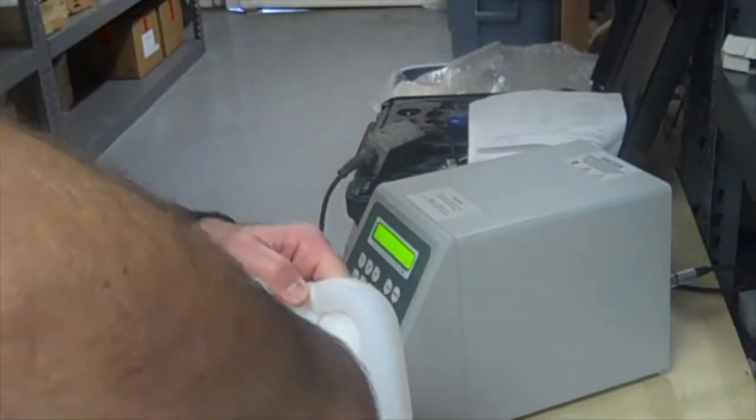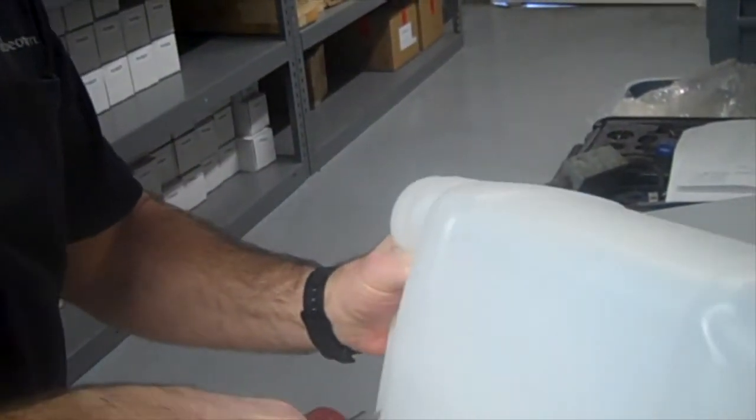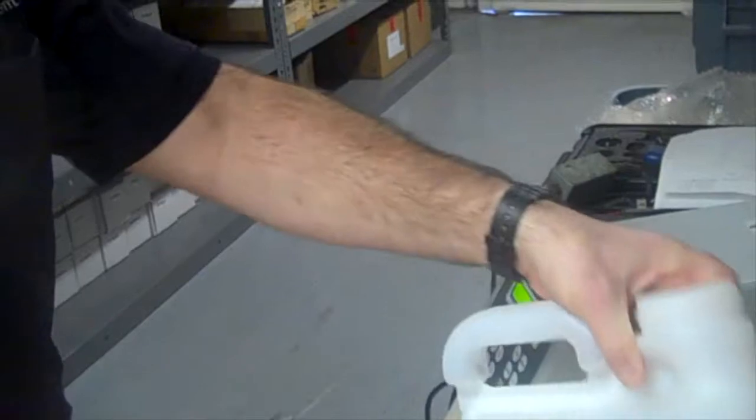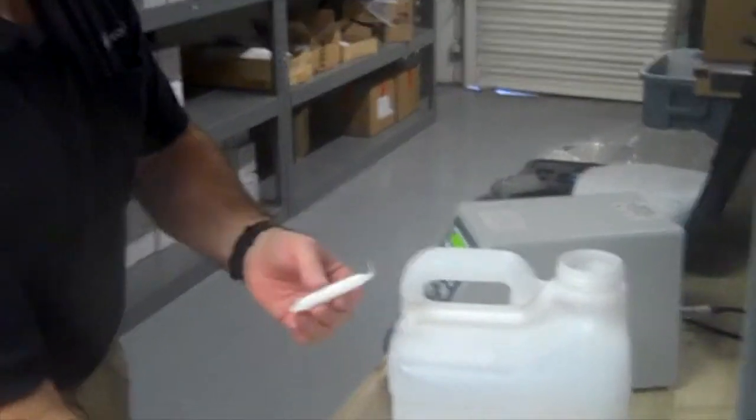Okay, this is Bob again. Test number four with the ultrasonic knife cutting out the inside of the handle. There we go. Nice clean cut.